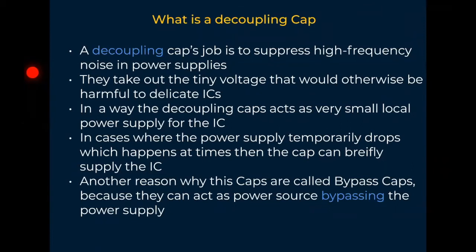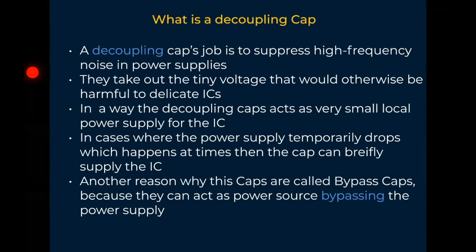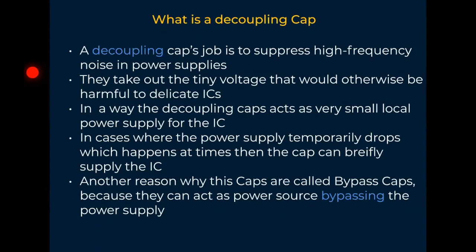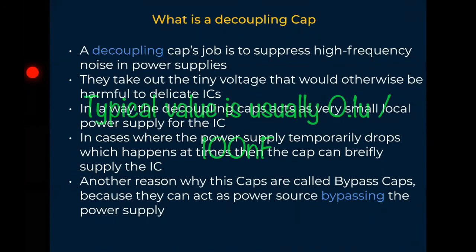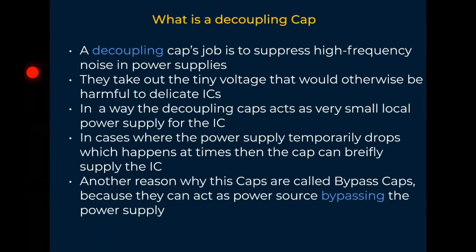The typical value for a decoupling capacitor is usually 0.1 microfarads or 100 nanofarads. We talked about the units of measurement for capacitors — microfarads and farads — the unit of measurement itself is farads, but caps are often expressed as microfarads. So the typical value for a decoupling capacitor is 0.1 microfarads, and you will find us using this from time to time in order to bypass some needs to the IC.